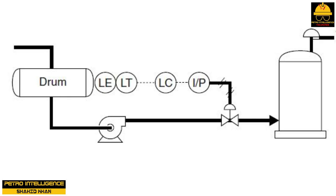A typical level control system uses a primary element sensing device, a direct or indirect level transmitter, controller, transducer, and control valve. Level control loops use floats, displacers, or differential pressure transmitters. A DP cell detects level changes; the primary element or sensor is inside the transmitter. These two devices couple to detect and send a signal to a level controller. A transducer converts the signal and opens or closes the control valve.